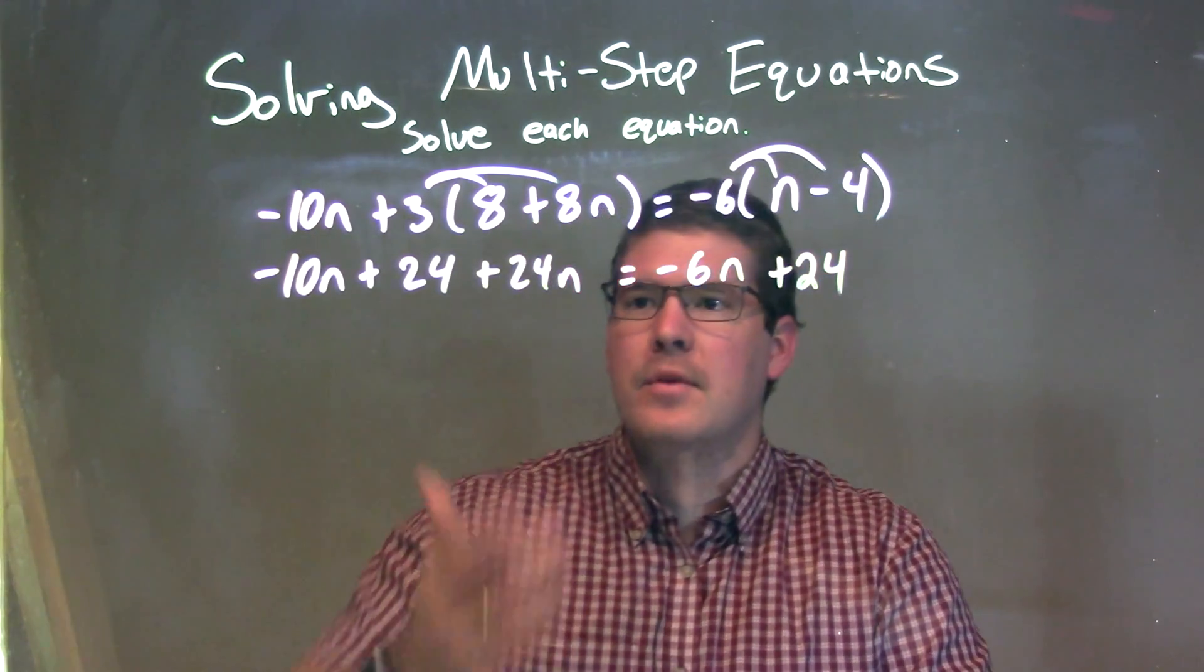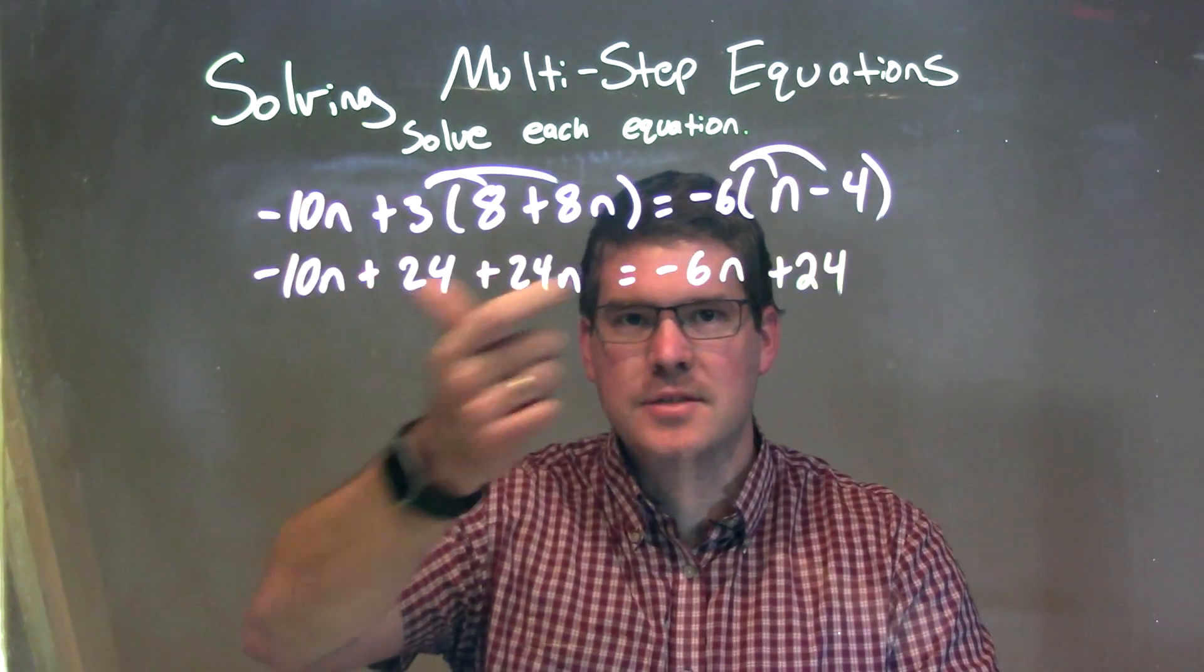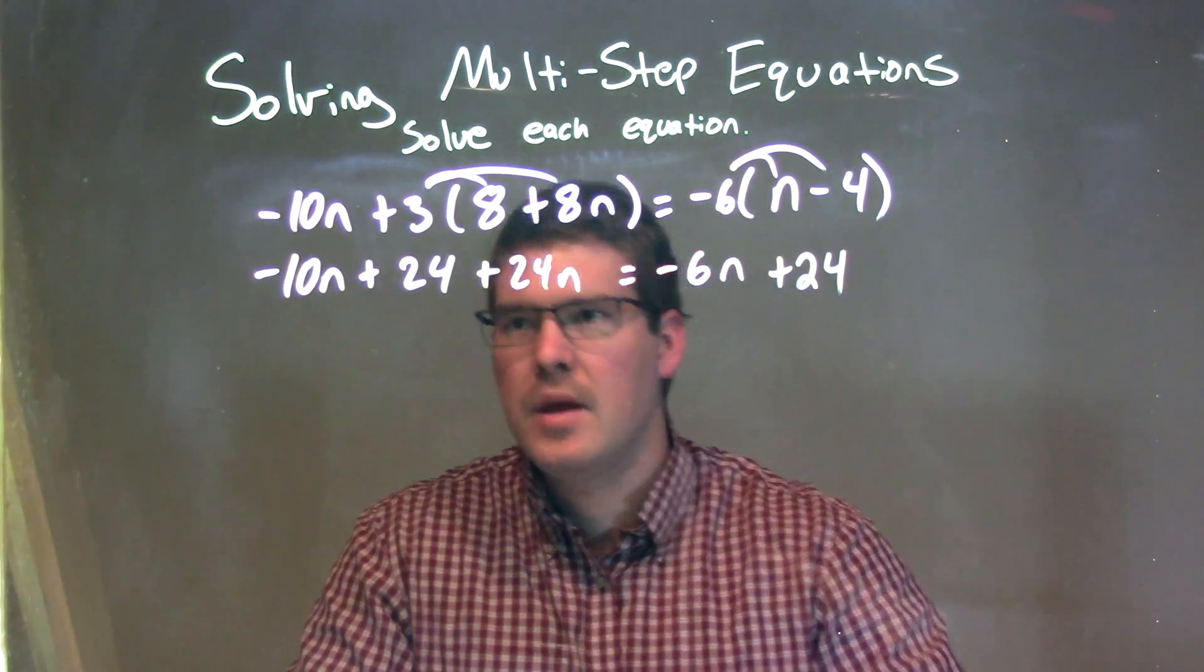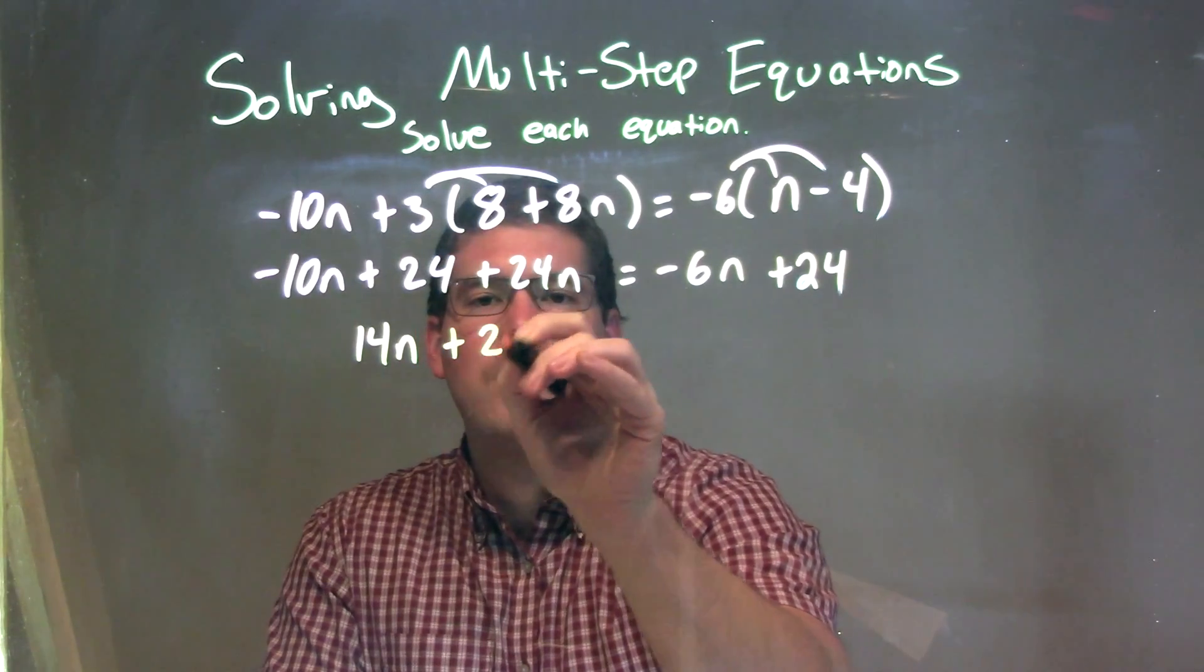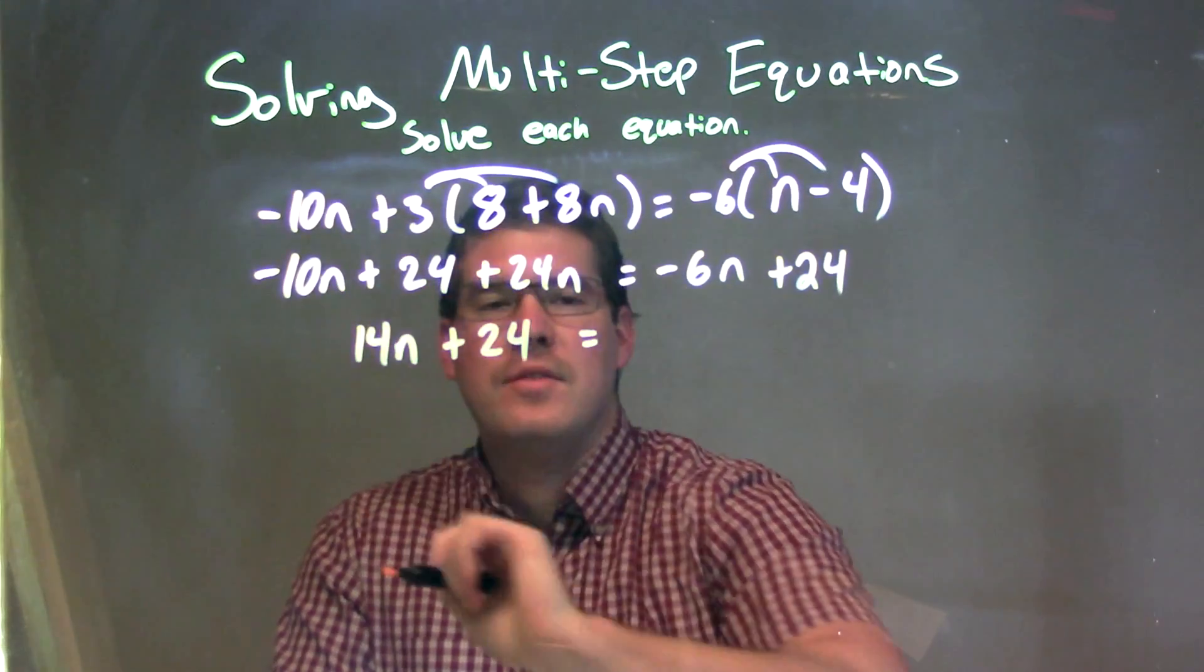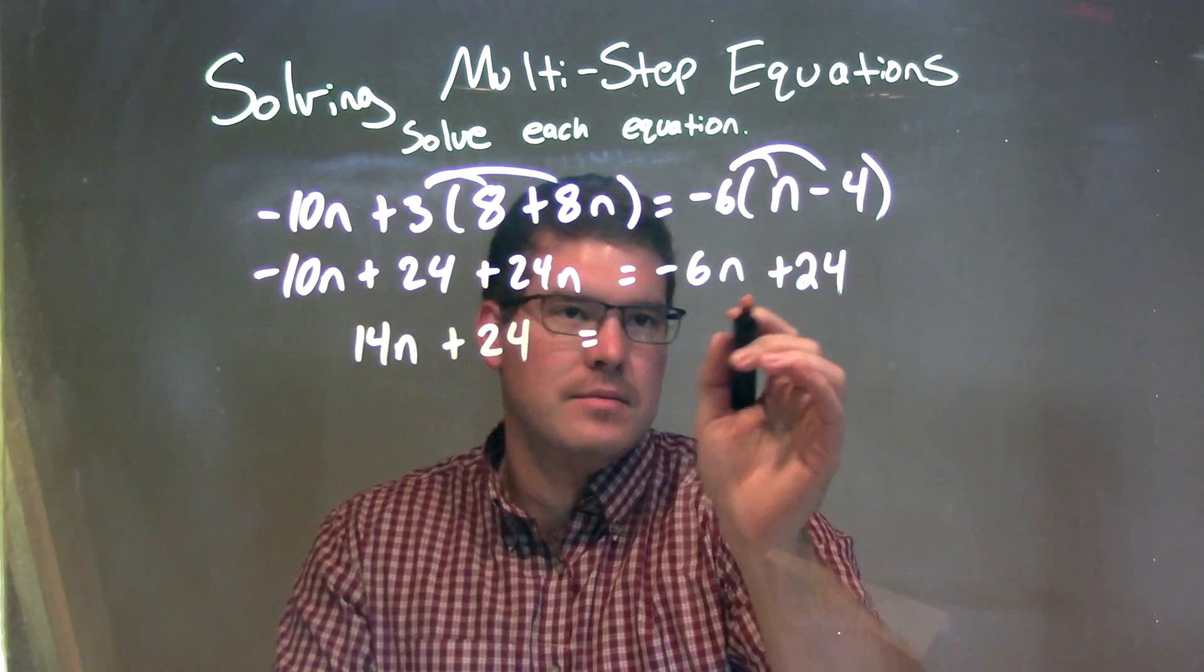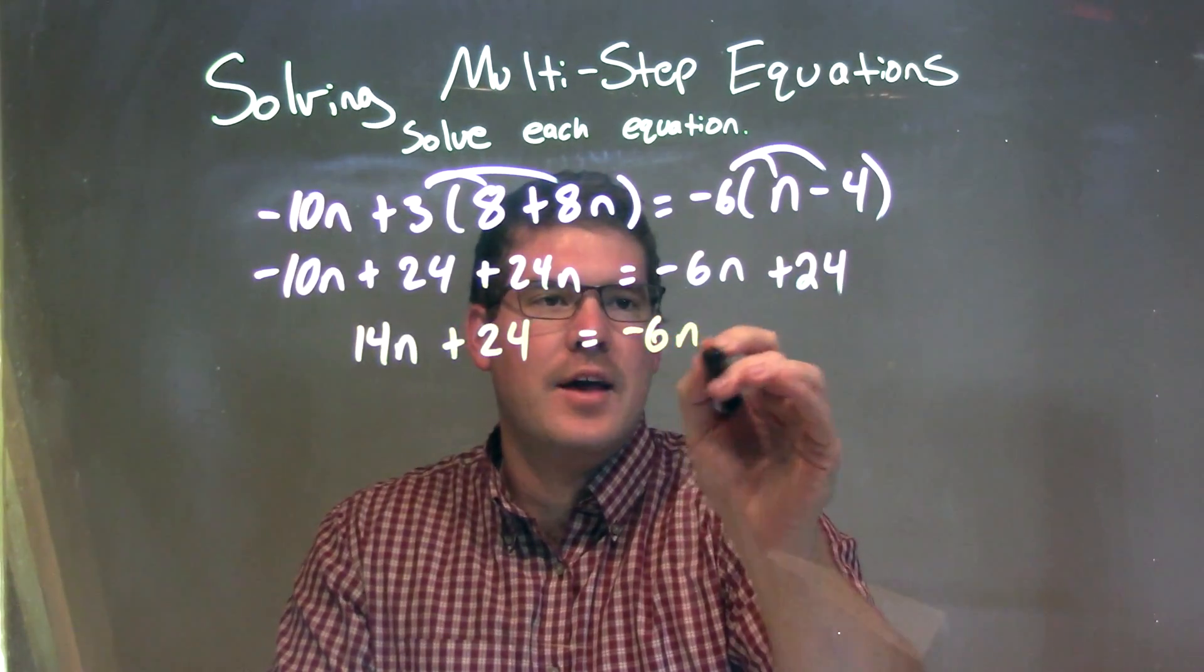So now what I'm going to do is simplify again, keep going on each side of the equation sign individually. The -10n and 24n come out to be 14n, and we add 24, bring that down. So we combine our n's there. On the left-hand side, there's nothing that we can combine. So -6n + 24.